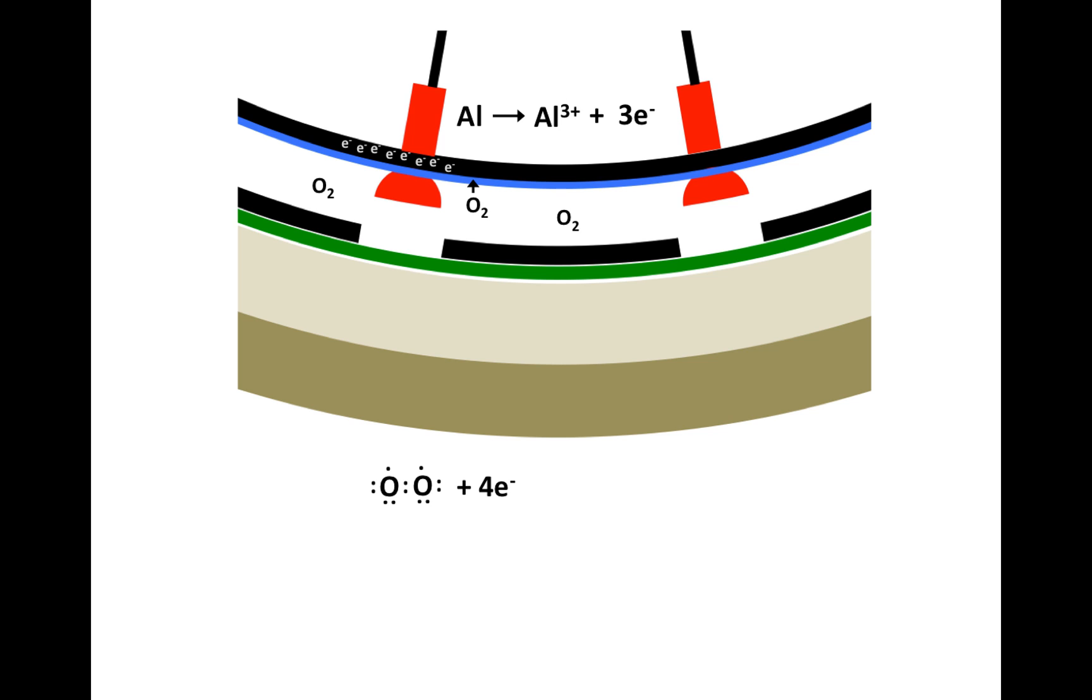So we combine that oxygen molecule with four of those abundant electrons which are in the rim, and that will split the oxygen molecule into two oxide ions, each of which has a charge of minus two.